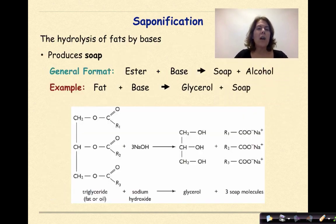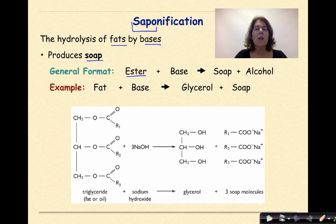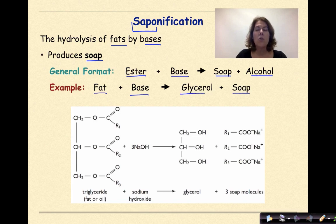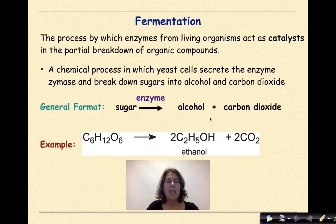Saponification is the hydrolysis of fats by bases, and it produces soap. The general format is an ester and a base producing soap and alcohol. For example, a fat plus a base produces glycerol and soap, as we can see in the reaction below. The key thing with saponification is just being able to recognize it and knowing that it produces soap as a product.